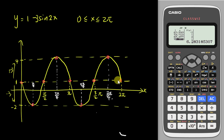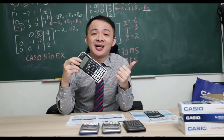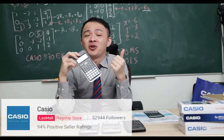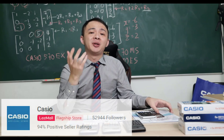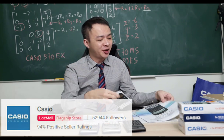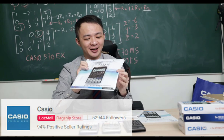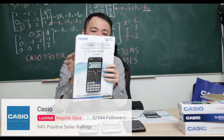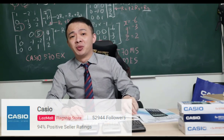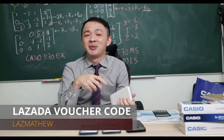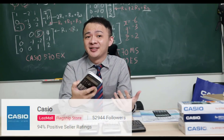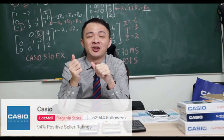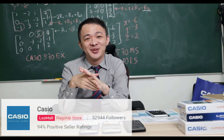I hope you find this video helpful. If you're interested in buying this calculator, I'll share the Lazada link in the description below — it leads to the Casio flagship store. Casio Malaysia is currently running a promotion: buy the calculator and get a free Casio alpha case, which is waterproof. Also, if you use my promotion code (shared in the description), you'll get an additional 5 ringgit discount. If you have any questions, post them in the comments below. See you in the next video, bye bye!